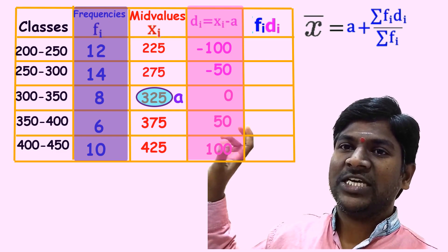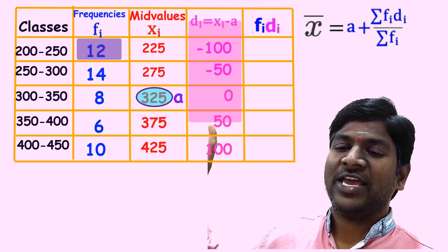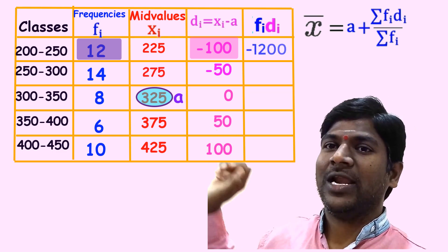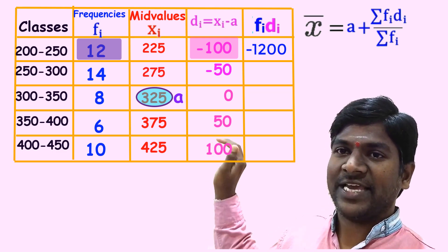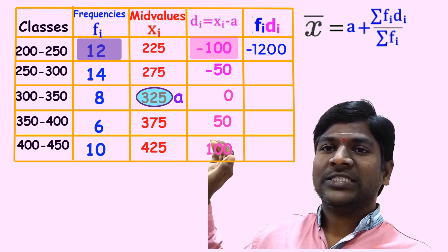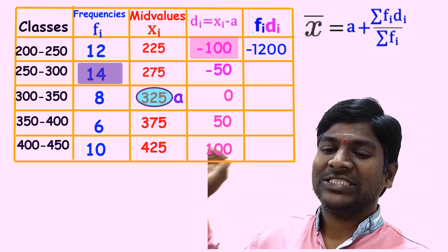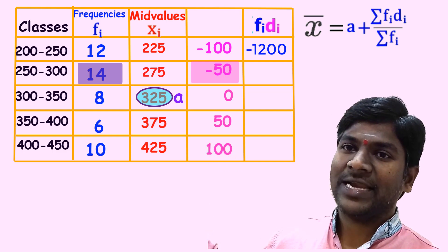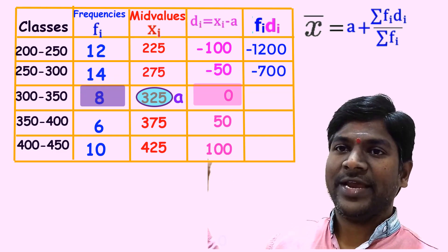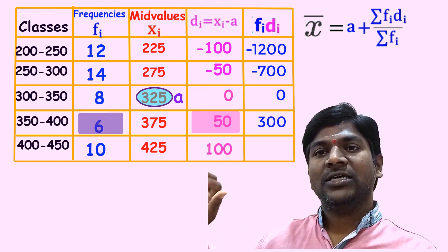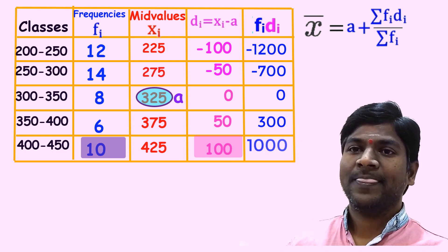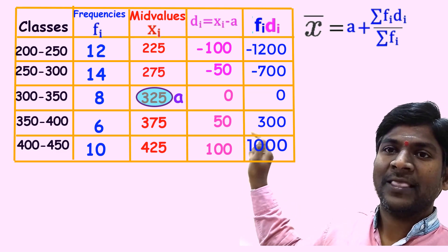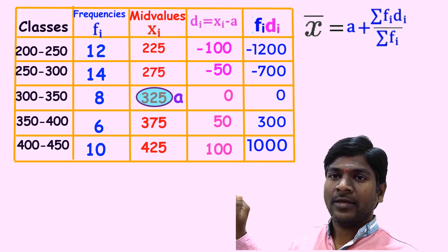Calculating f_i × d_i for each class: 12 × (−100) = −1200; 14 × (−50) = −700; 8 × 0 = 0; 6 × 50 = 300; 10 × 100 = 1000. The f_i d_i values are −1200, −700, 0, 300, and 1000. You can see the same values on the screen.